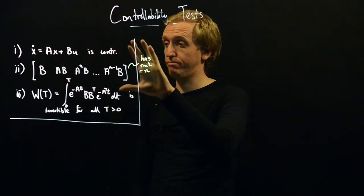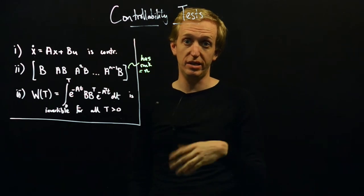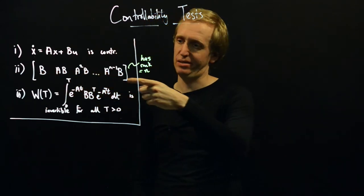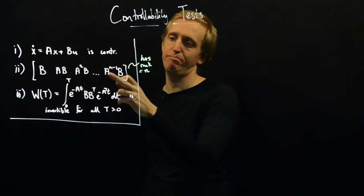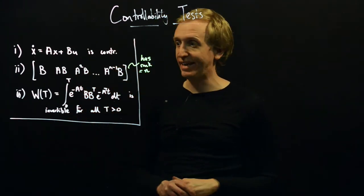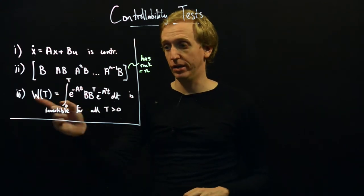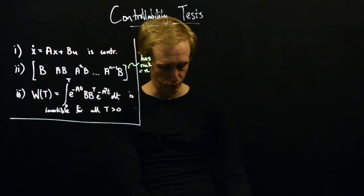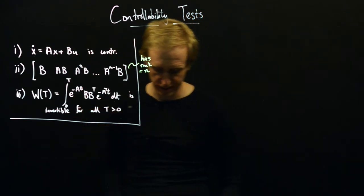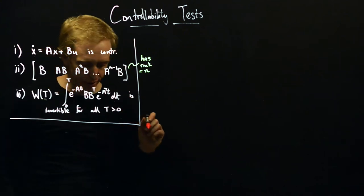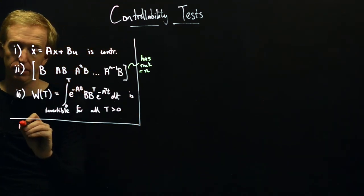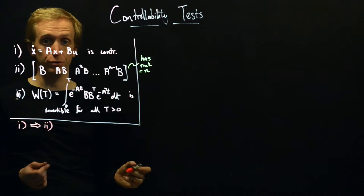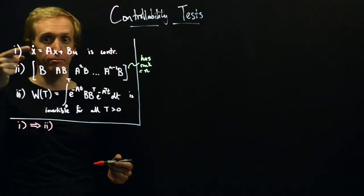What we'd now like to do is prove this equivalence — why the definition of controllability is equivalent to this test involving the matrix with powers up to N minus one. Here comes the Cayley-Hamilton theorem. Our proof strategy is: we show that one implies two, two implies three, and three implies one, demonstrating that all three statements are equivalent.